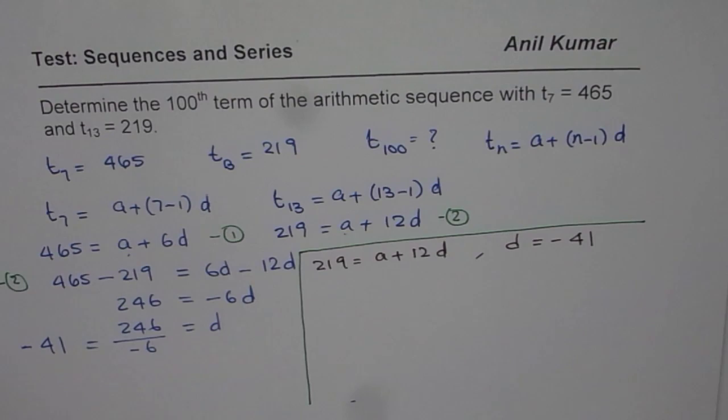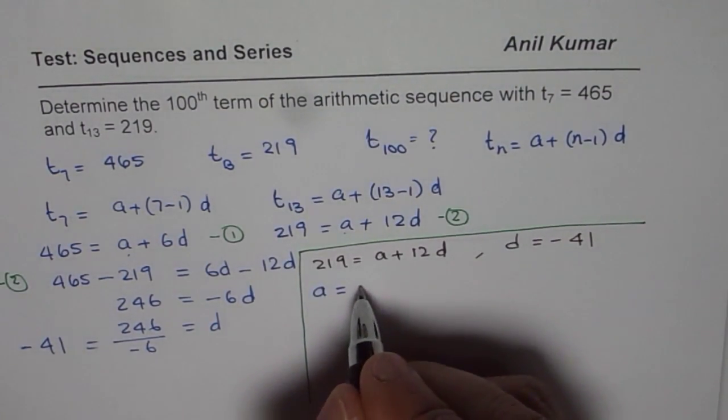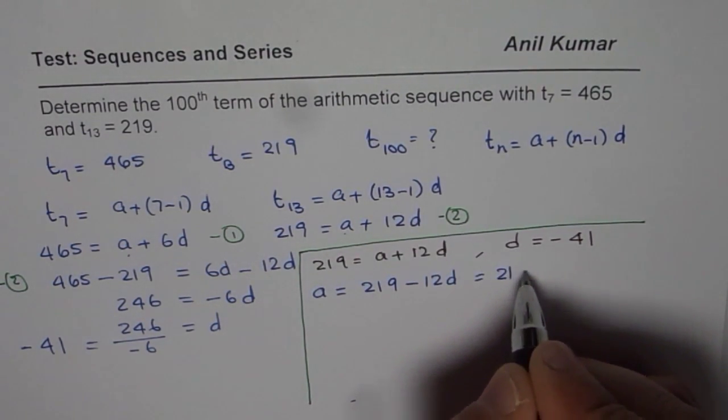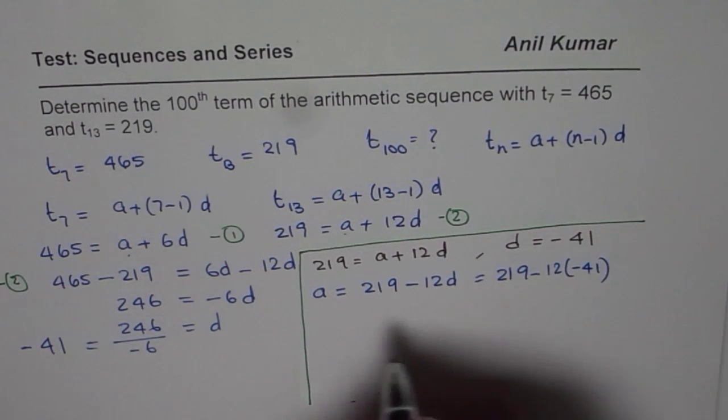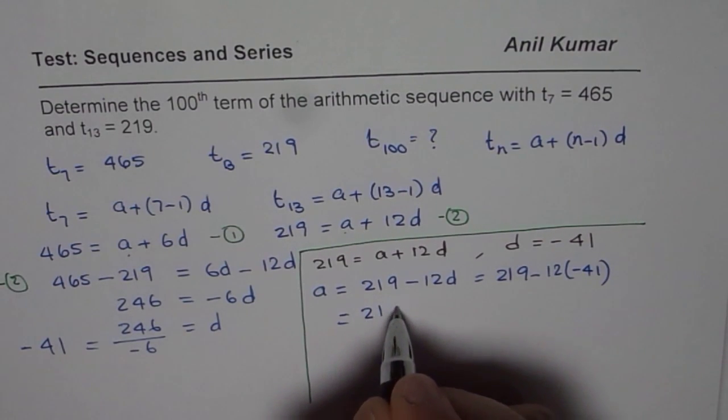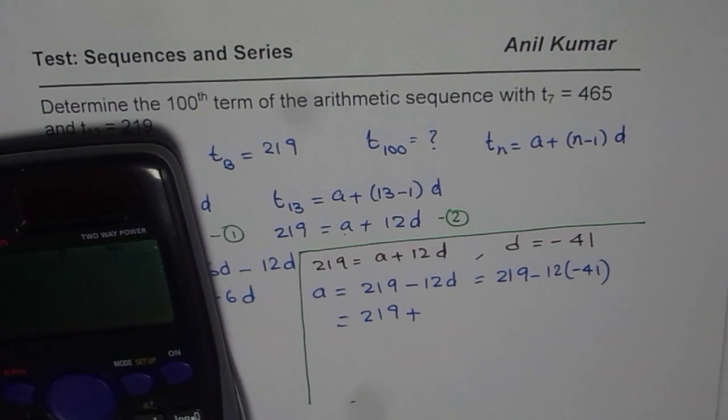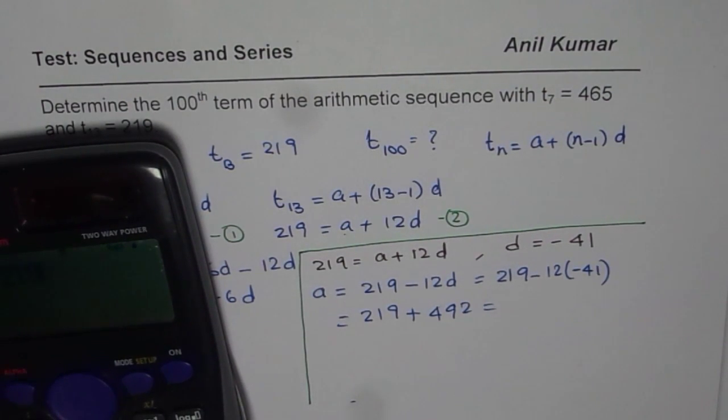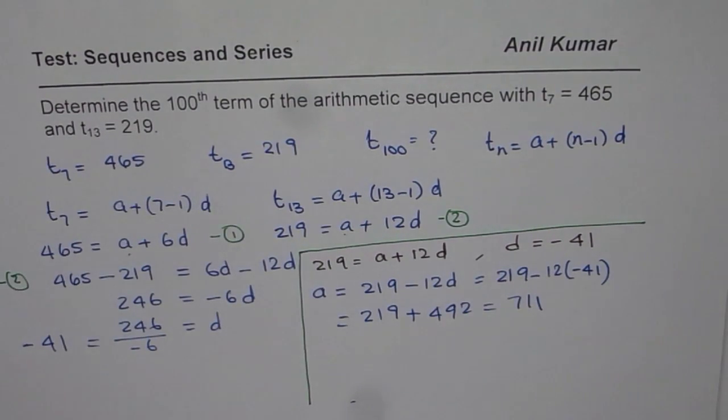So using that equation, we can find A. From here, A equals 219 minus 12D, which is 219 minus 12 times minus 41. That gives us the value of A, which is 219 plus, let us multiply, 12 times 41 is 492. Let us add 219 to it. So we get 711. So 711 is the value of A.